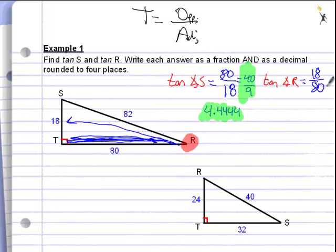In the same way 80 over 18 reduces to 40 over 9, you should be able to tell that 18 over 80 is going to reduce to 9 over 40. Same numbers, just flipped over.